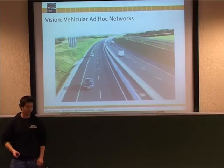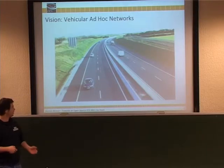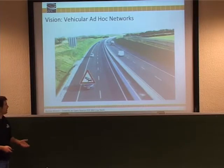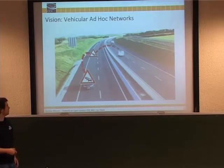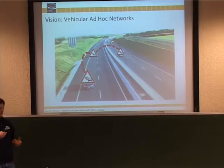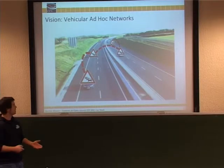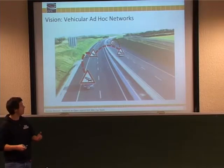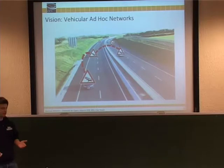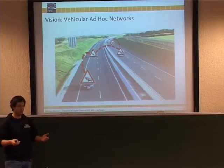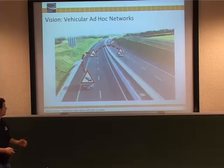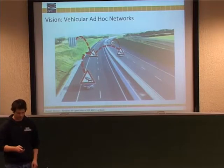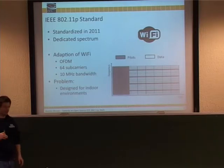To give a quick idea of what vehicular networks are about: there's a vision where cars are equipped with a radio module. If a driver realizes there's a traffic jam ahead, he can communicate this to all surrounding cars. Cars on the other lane could pick up the information and relay it to vehicles further back, making driving safer by warning about jams, potentially avoiding rear-end crashes, or suggesting alternate routes. Road signs could also be incorporated into this network.